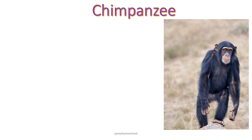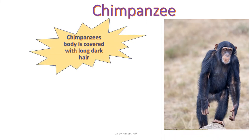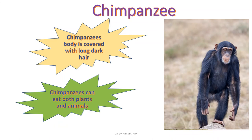This is chimpanzee. Chimpanzee also looks like a monkey, but chimpanzee's body is covered with long dark hair, and this is how we can differentiate between monkey and chimpanzee. Chimpanzees can eat both plants as well as animals.